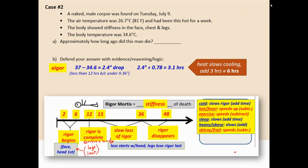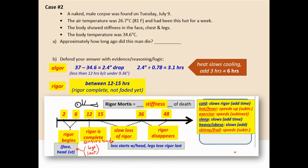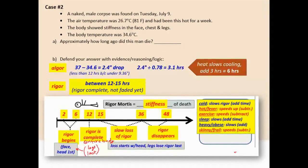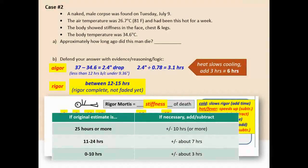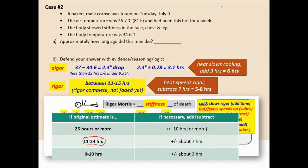For rigor mortis: the body has stiffness in the face, chest, and legs that hasn't faded anywhere — rigor is complete and hasn't started to fade, putting it at 12 to 15 hours. But in a very hot environment the rigor mortis process speeds up, so we subtract about 7 hours. Instead of 12 to 15 hours, the adjusted range is about 5 to 8 hours.